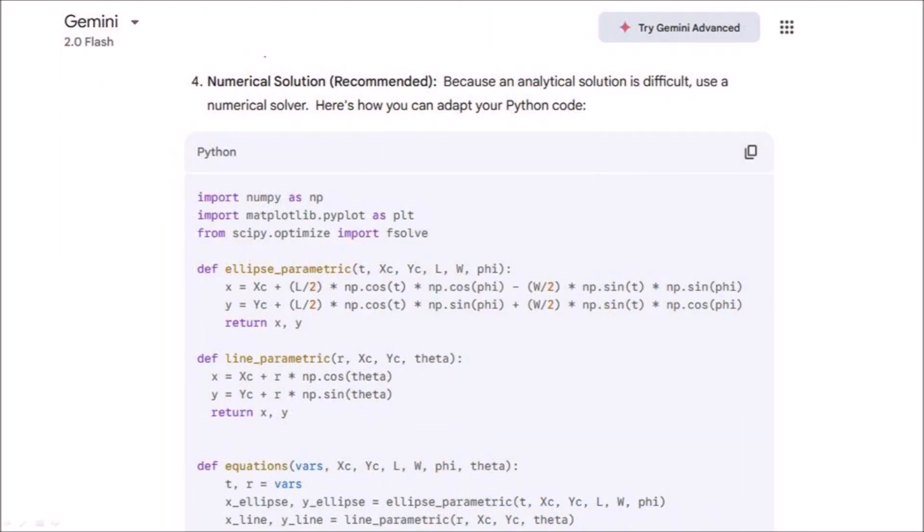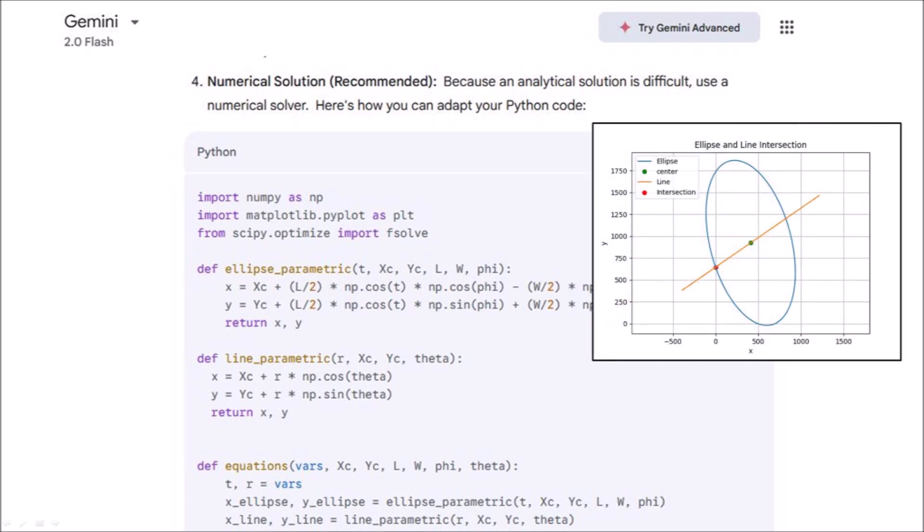I went back to Gemini and rephrased my question in more precise terms. This time the AI program suggested using a numerical solver and provided some Python code. I tested the sample code on a single sample point and it worked. I then incorporated the code into my program.